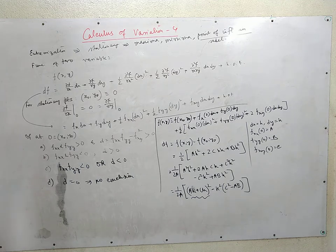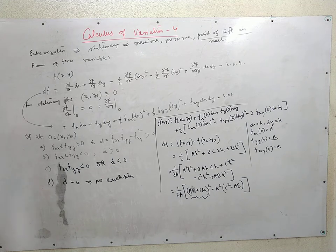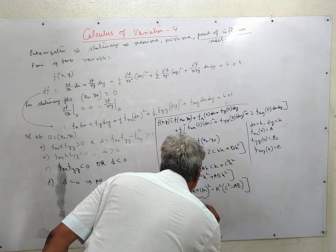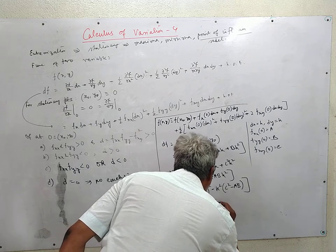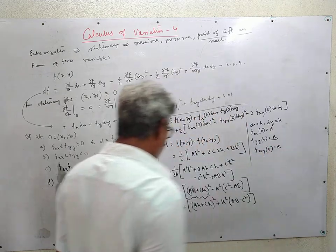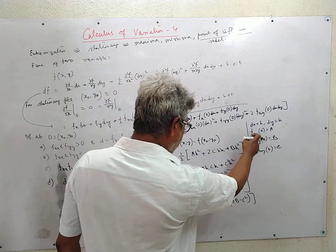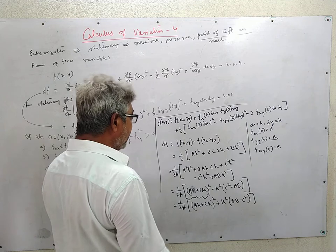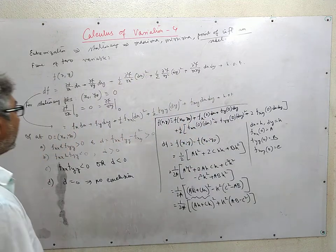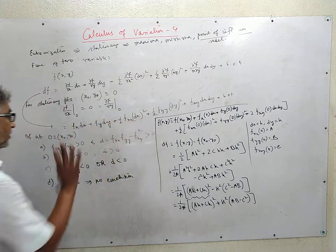If A = f_xx is positive and AB > C², meaning D > 0, the right-hand side is positive, so it is a point of minimum. If A = f_xx is negative and D > 0, then the expression is negative, corresponding to a point of maximum. Now let us take a simple example of a function of two variables and analyze the nature of its singularities.